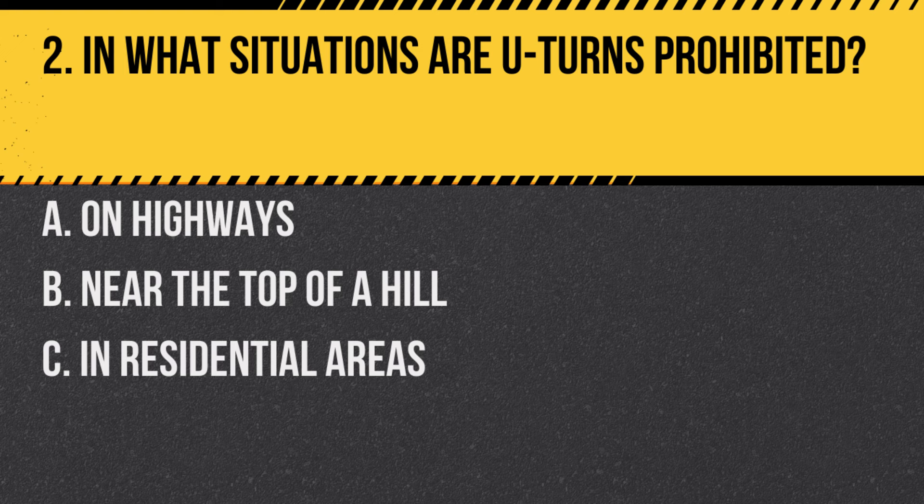Question 2: In what situations are U-turns prohibited? A. On highways. B. Near the top of a hill. C. In residential areas. Answer: B. Near the top of a hill. U-turns are generally prohibited near the top of a hill where visibility is limited, as well as in other specific situations depending on local laws.